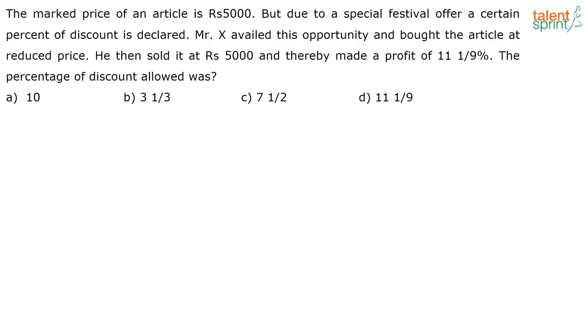What is given here? Marked price of an article was Rs 5,000 and due to a special offer, a certain discount was given. Cost price of Mr. X, taking it as Rs X. Mr. X is buying it for Rs X. Now, he is selling it and making a profit of 11 1/9 percentage.